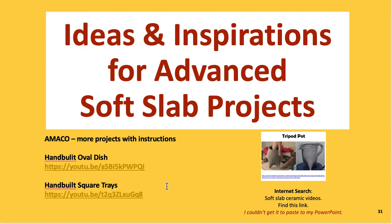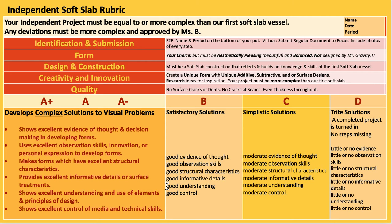Your second project is a more advanced version. The form is your choice but must be aesthetically pleasing — beautiful, balanced, and not designed by gravity. Design and construction must use soft slab construction that reflects and builds on knowledge and skills from the first soft slab vessel. Creativity and innovation: create a unique form with unique additive, subtractive, and surface designs. Research ideas for inspiration; your project must be more complex than the first soft slab, developing complex solutions to visual problems.